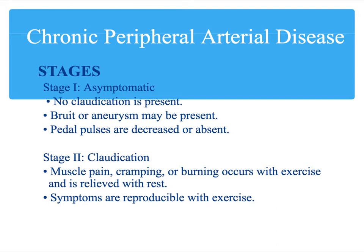Stage 2 is characterized by claudication — muscle pain and cramping, similar to angina, that occurs with exercise and is relieved at rest. This is similar to stable angina discussed in Module 9. In peripheral arterial disease, this is called intermittent claudication. The patient can usually walk only a certain distance before cramping, burning, and muscle discomfort force them to stop, and then the pain resolves with rest. This is a classic sign of Stage 2 PAD.